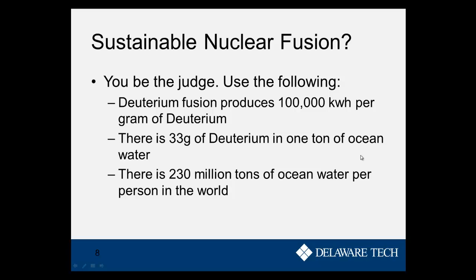The same sort of facts I want to give you for sustainable nuclear fusion. If we use deuterium fusion, we can produce 100,000 kilowatt hours per gram of deuterium. And there's 33 grams of deuterium in one ton of ocean water. And there's 230 million tons of ocean water per person in the world. Use those facts when you're thinking about your discussion board.